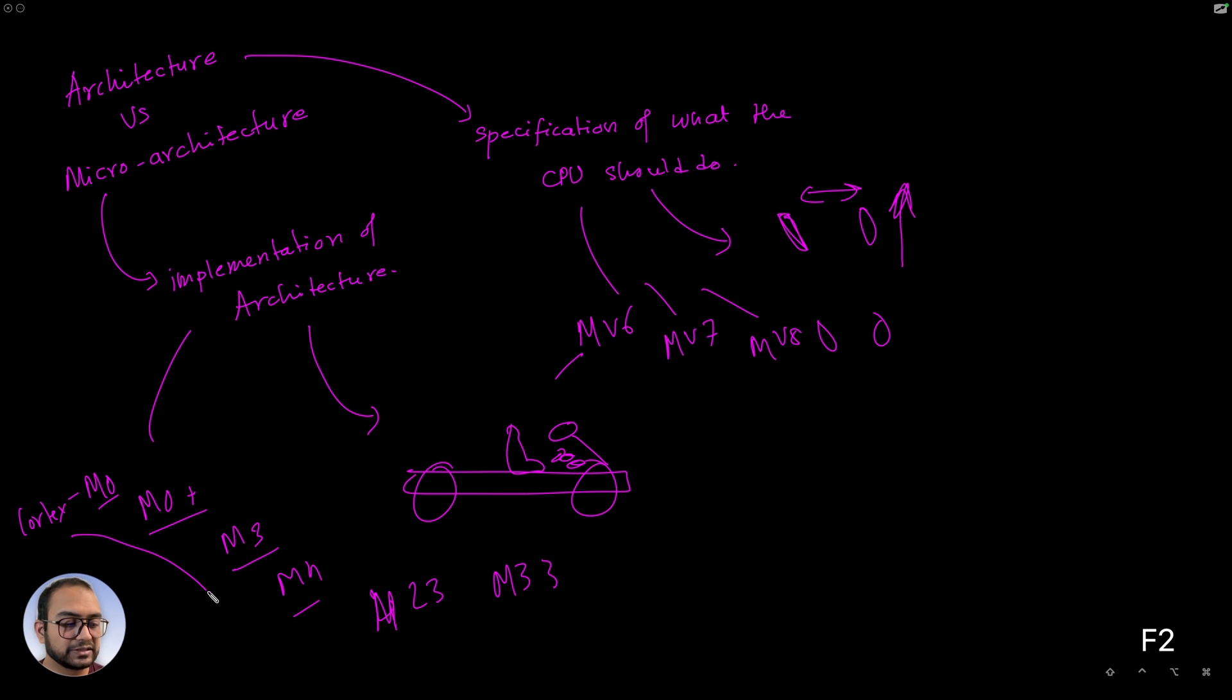All of these M-class architectures essentially build on top of each other. MV6 is the most primitive, MV7 adds on more restrictions or behavior, specifies more behaviors as to what an M-class CPU should do, but it is also backwards compatible with the MV6 architecture.